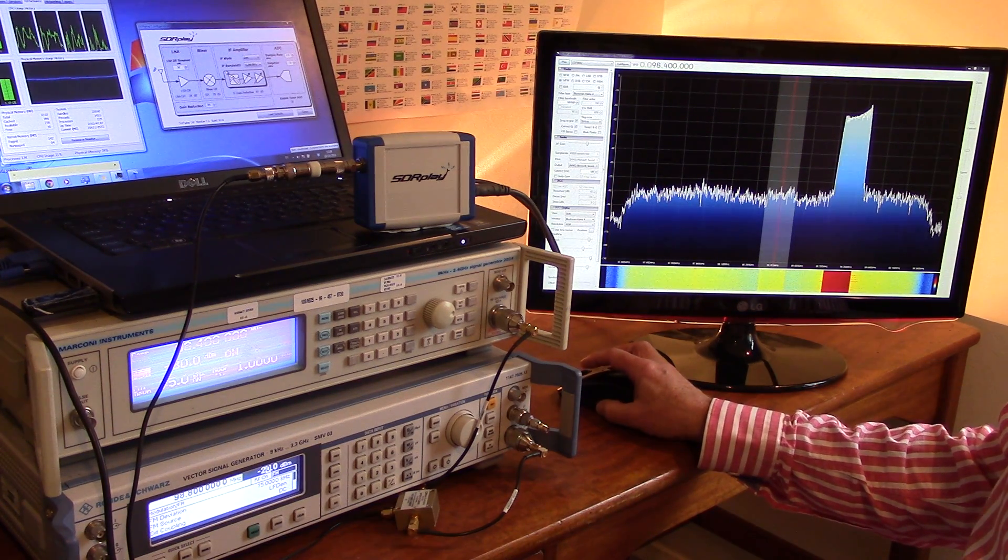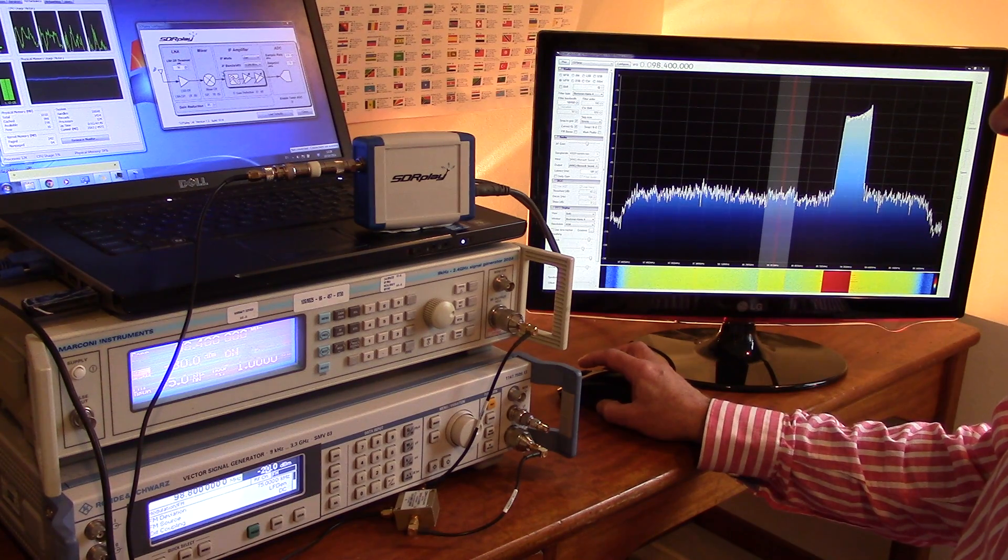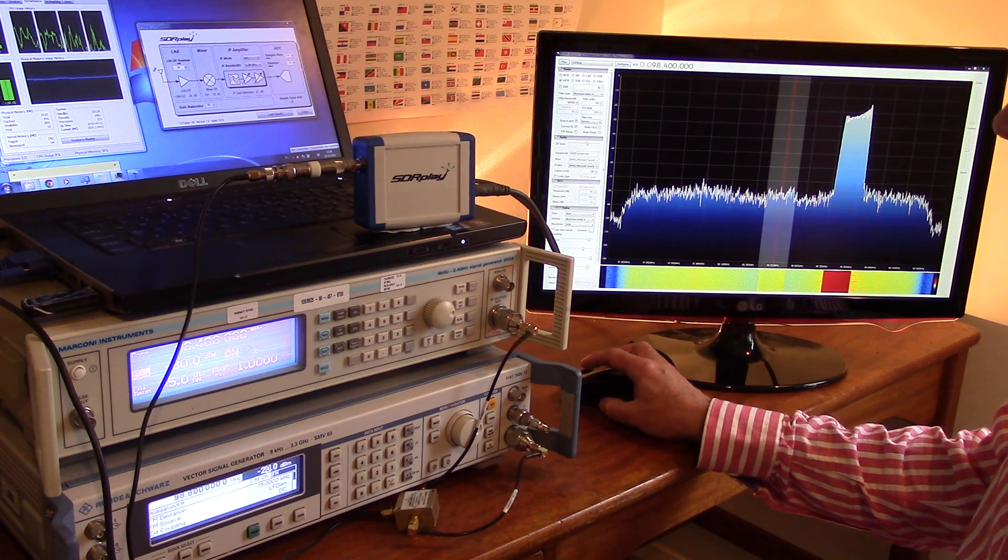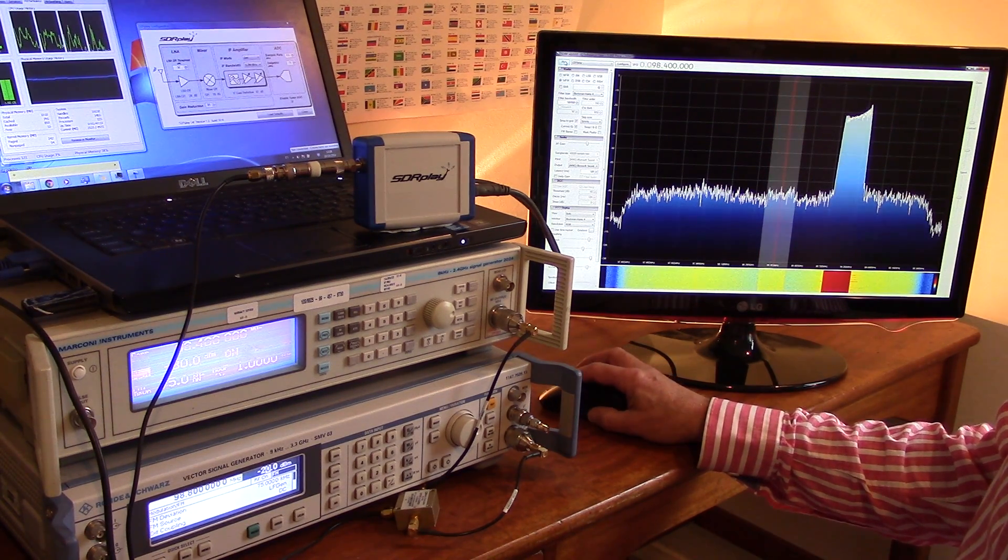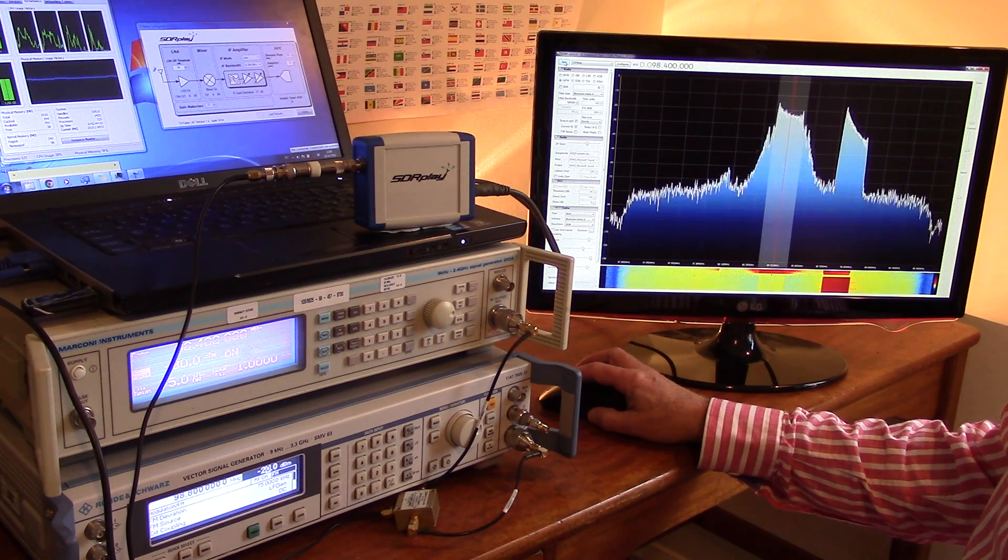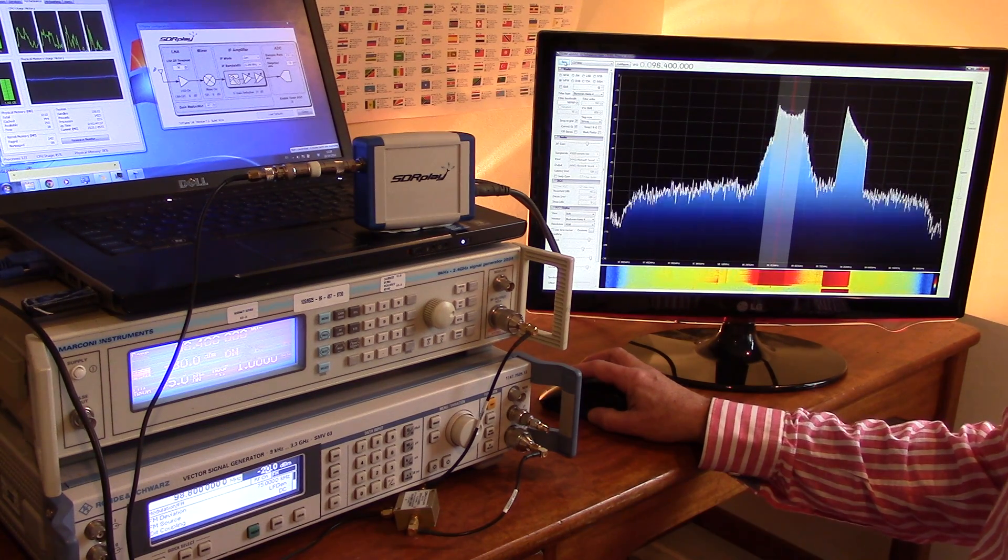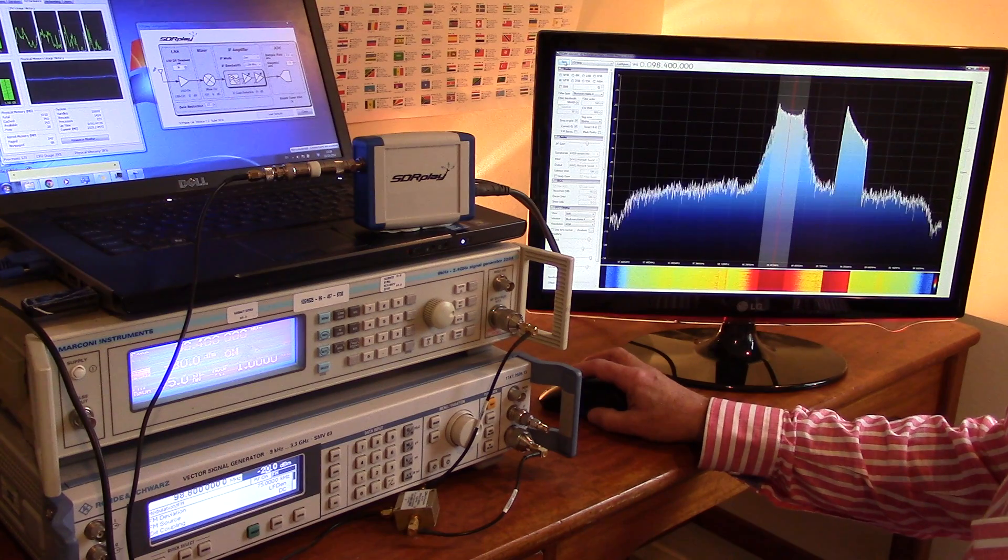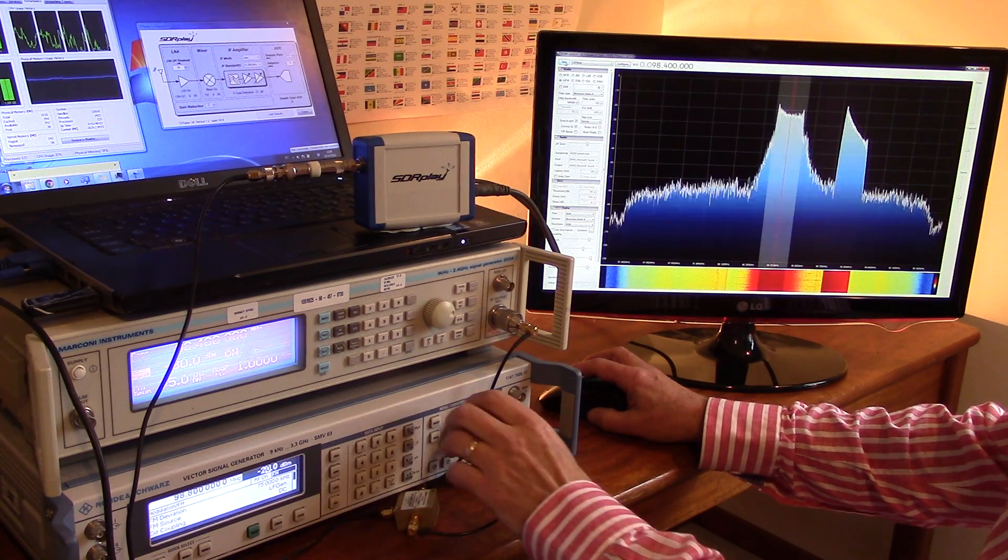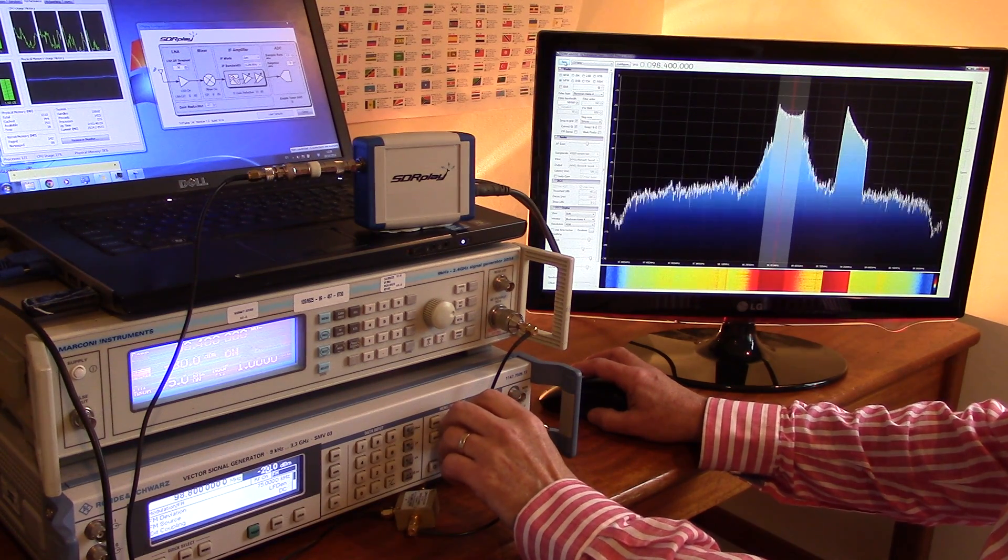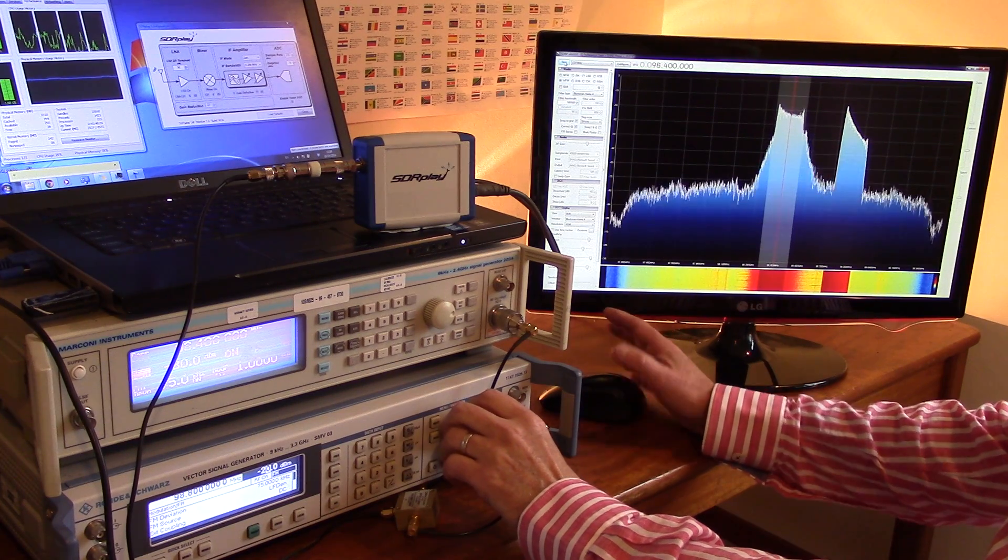We'll restart SDR sharp and you can already hear the wanted signal crisp and clear. Plenty of dynamic range now. We've got 60 dB and I can continue to increase the size of the unwanted signal.